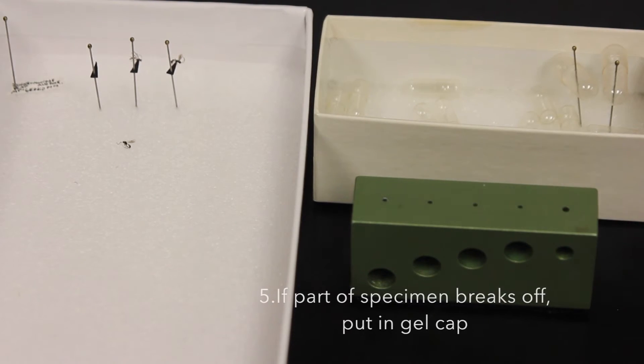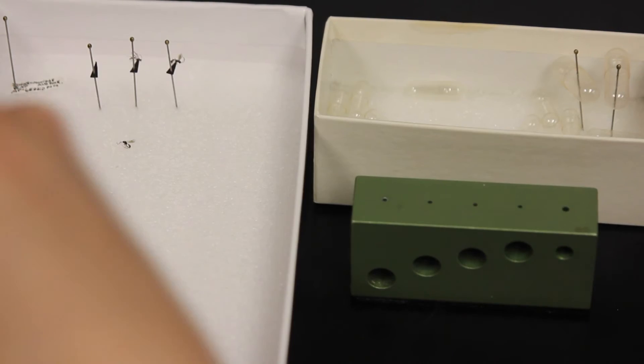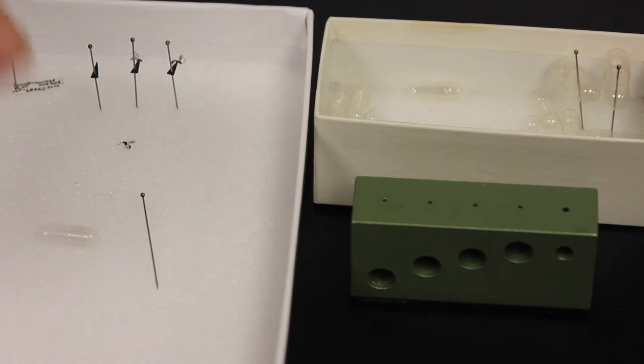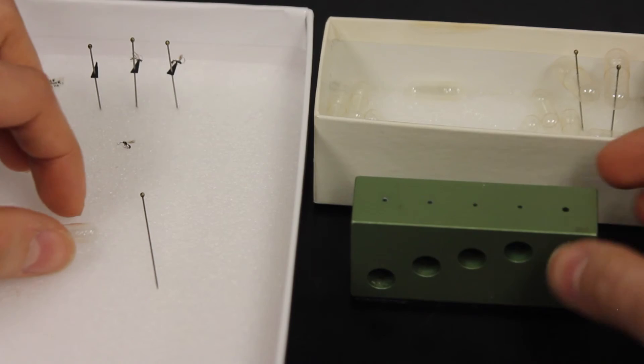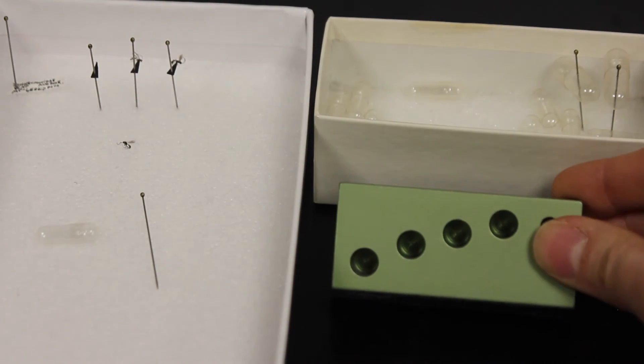In cases where an organism or its parts have fallen off of the pin, we need to re-pin them using a gel cap. To prepare the gel cap pin, we need to take our number 3 gel cap and our number 3 pin. For when entire specimen have fallen off, such as this one, and cannot be re-pointed, we're going to use the first deepest hole on the pinning block.